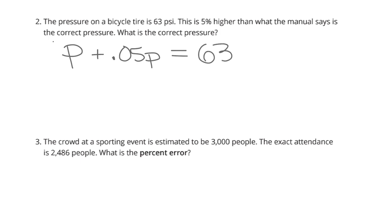So if we simplify this, this is really just 1P. And so 1.05 times the correct pressure is equal to 63. In other words, 105% of the correct pressure is equal to 63. Now, if we go ahead and divide by 1.05 here on both sides, we're going to end up with our correct pressure being 60 pounds per square inch.